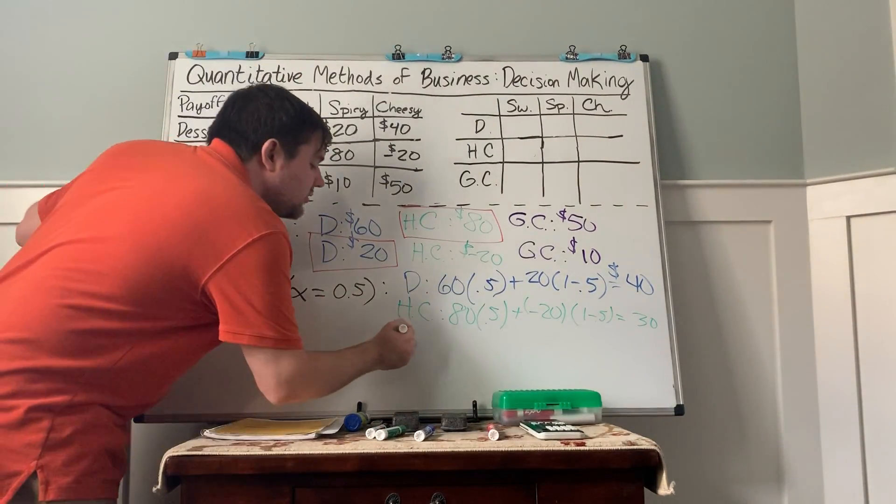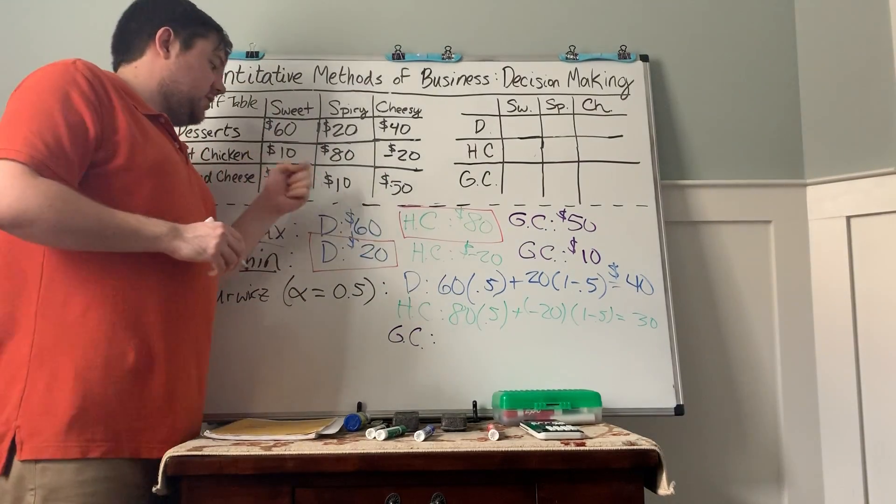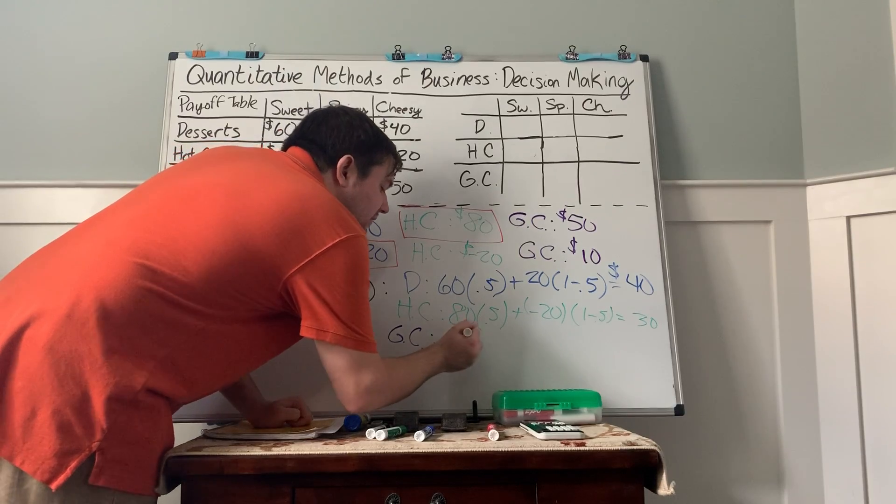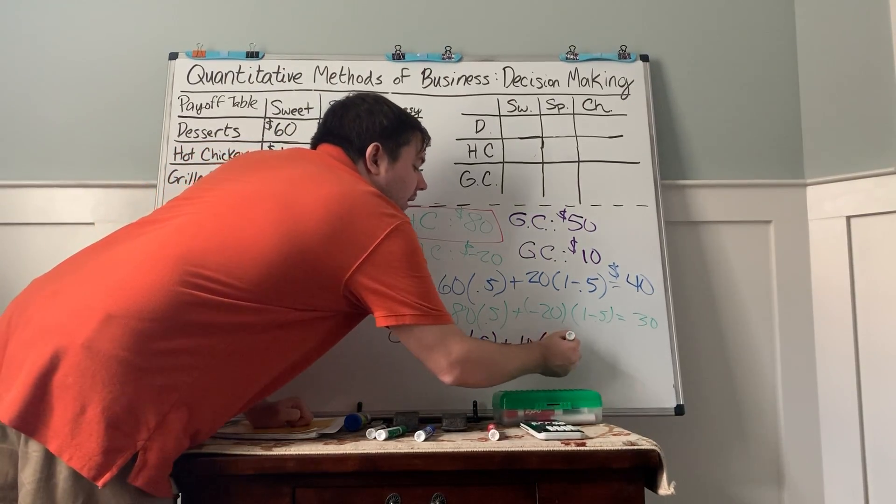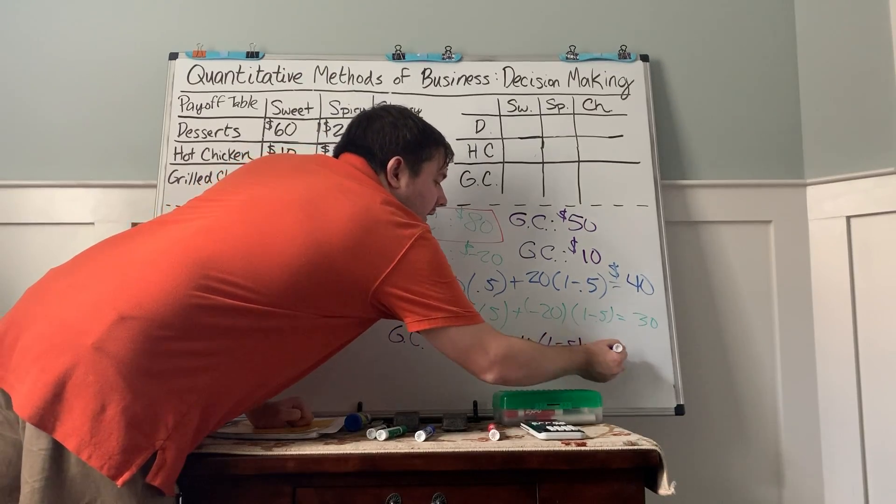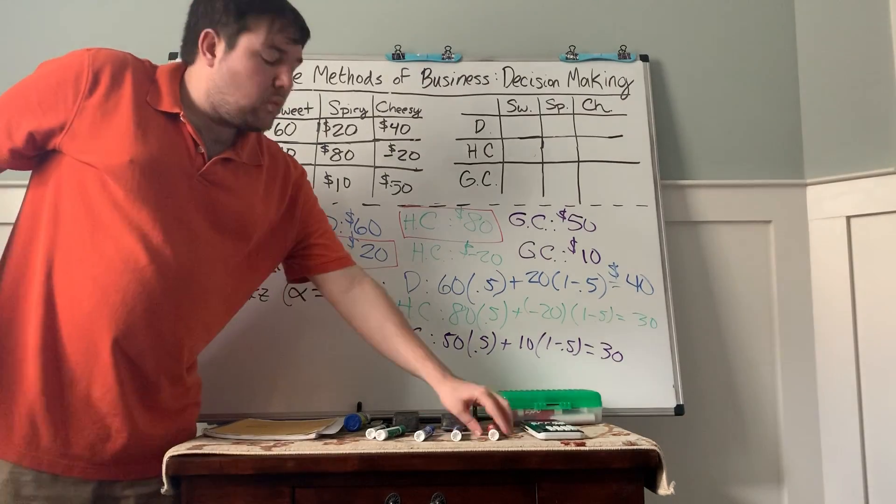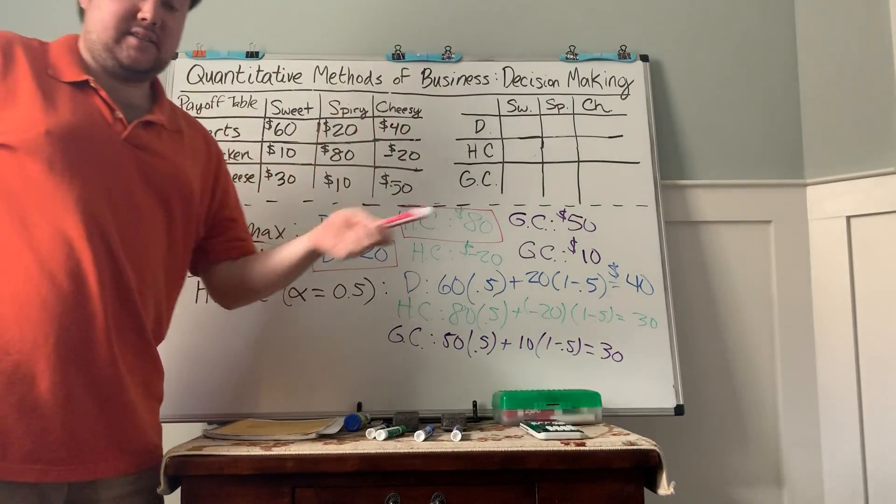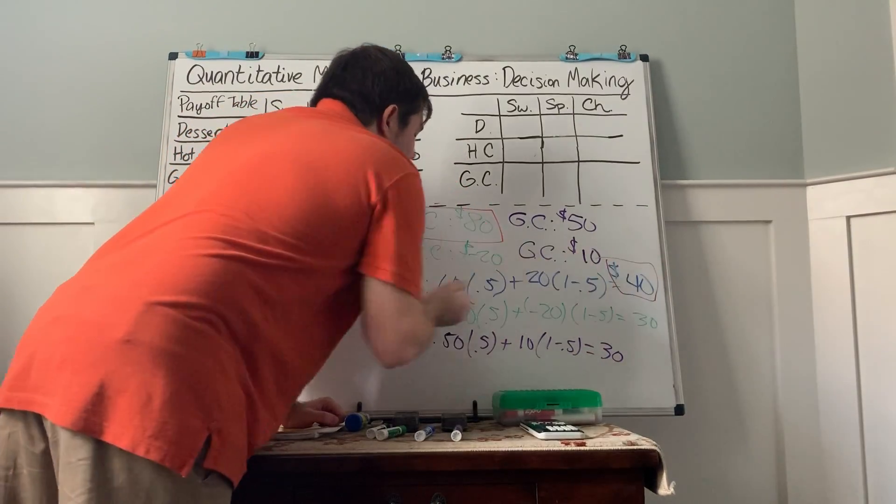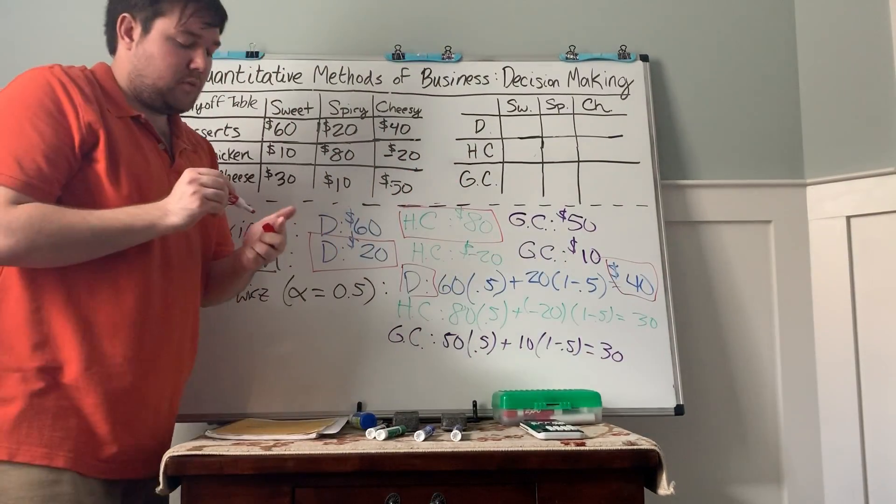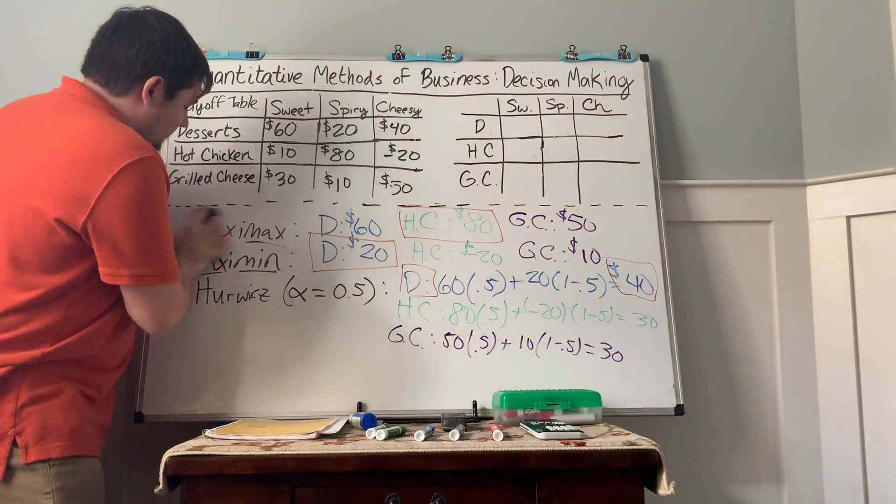Final, of course, is the grilled cheese. Best case is 50, worst case is 10. So we have 50 times 0.5, and we've got 10 times 1 minus 0.5, and that gives us also 30. And so we pick the largest of them, because these are still payoffs. The best case in this would be the dessert shop.